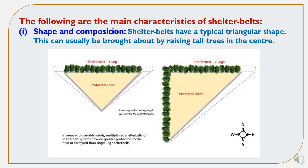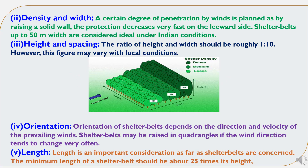In areas with variable winds, multiple-leg shelter belts or shelter belt systems provide greater protection to the field or farmyard than single-leg shelter belts. The second characteristic is density and width. A certain degree of penetration by winds is planned, as raising a solid wall causes protection to decrease very fast on the leeward side. Shelter belts up to 50 meters in width are considered ideal under Indian conditions.